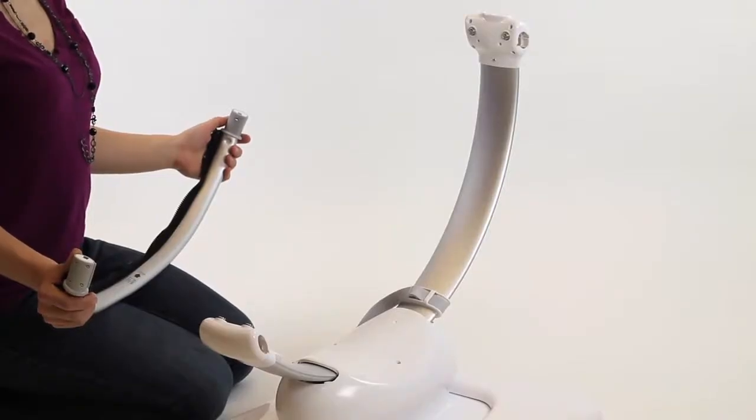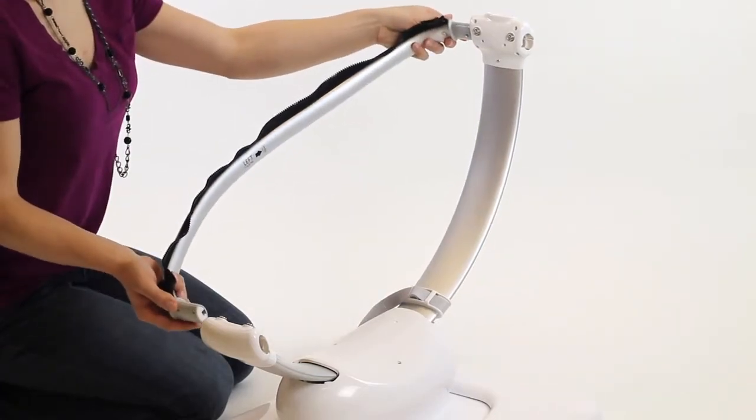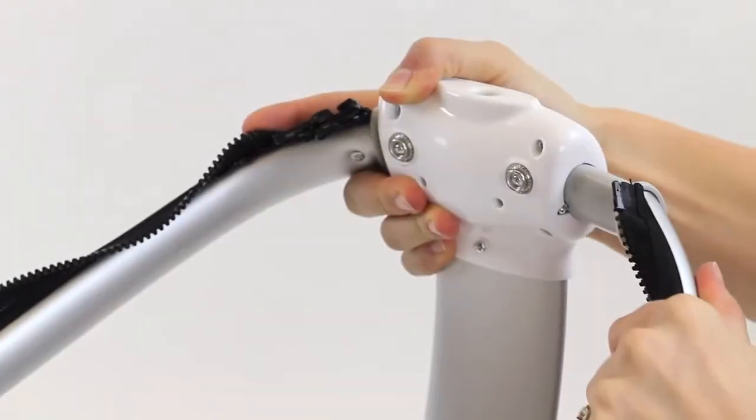To install the seat side rails, note the label on each rail. Slide the rails into the end caps of the center support tube until you hear a click.